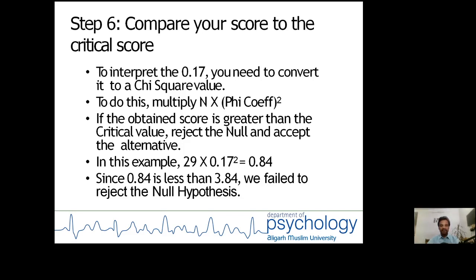Now step six: Compare your score to the critical score. To interpret the 0.17 value of the phi coefficient, you need to convert it to a chi-square value. The formula for the conversion is n into square of the phi coefficient. In this case, we have n equals 29, so 29 into 0.17 squared equals 0.84.